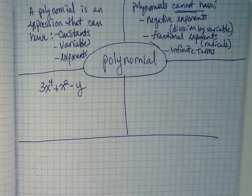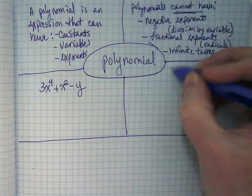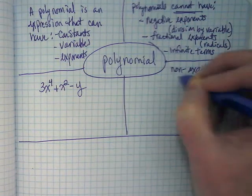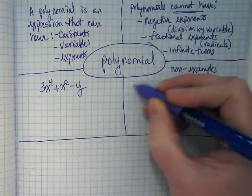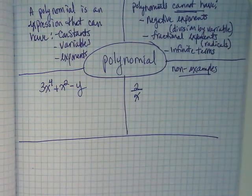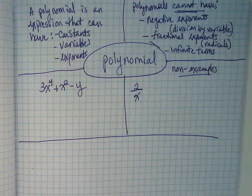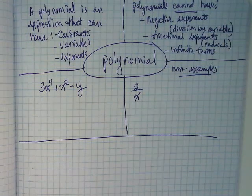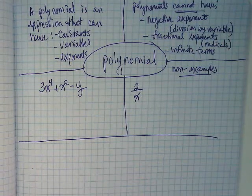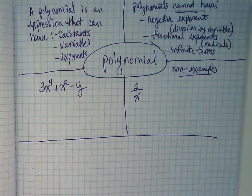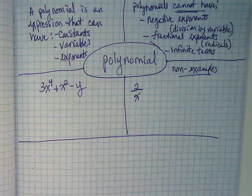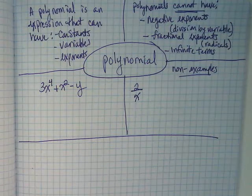So let's put down some non-examples to go with our list of things that they don't have. 2 divided by x would be the first bullet. Instead of showing this with a negative exponent, we haven't done our exponent unit yet. I'm dividing this by a variable, which can happen in math. In algebra, it just cannot happen as a polynomial.